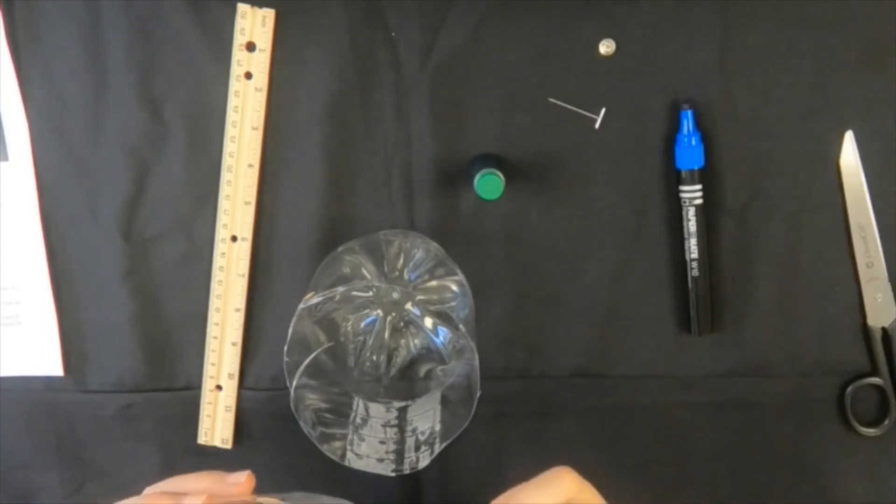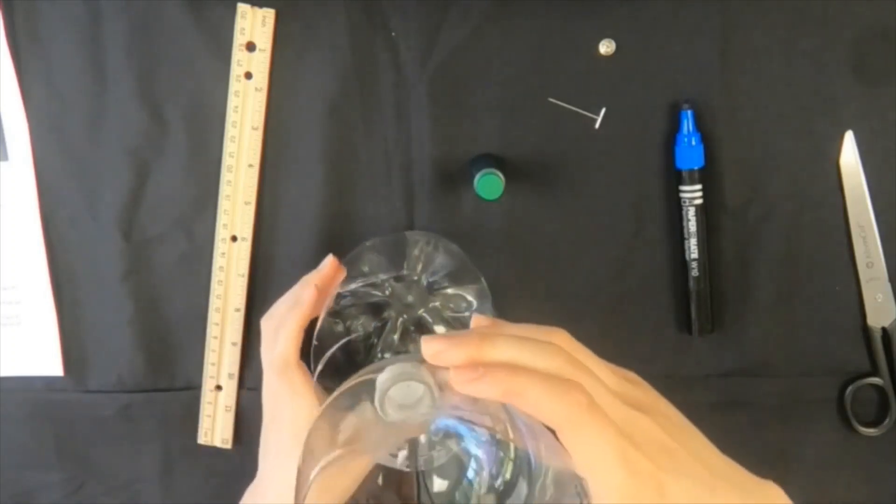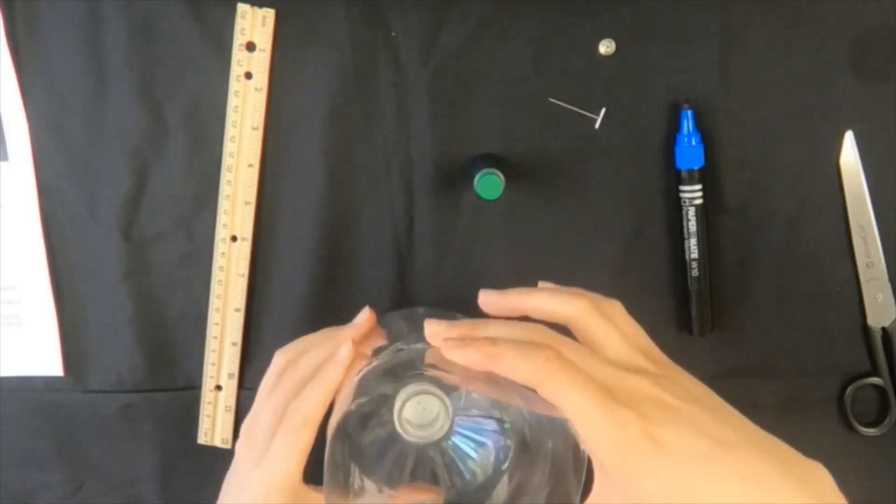Screw the bottle cap back on and turn that half of the bottle upside down and place it inside the bottom half of the bottle. The bottle top should be facing into the interior of the bottle.